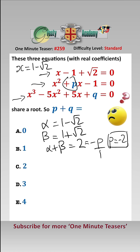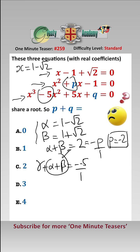Looking at the cubic, by the conjugate root theorem the first two roots must be alpha and beta. Now gamma plus alpha plus beta must equal minus minus 5 over 1, and we know that alpha plus beta is 2, therefore gamma is equal to 3.